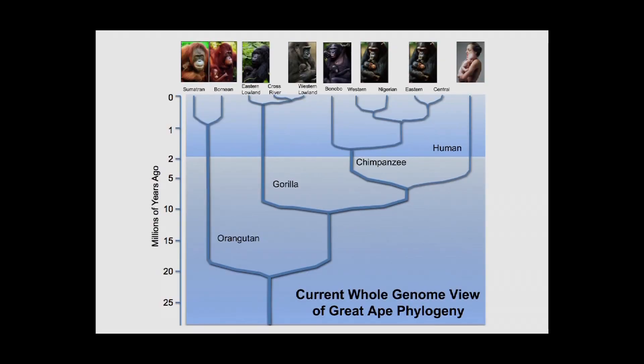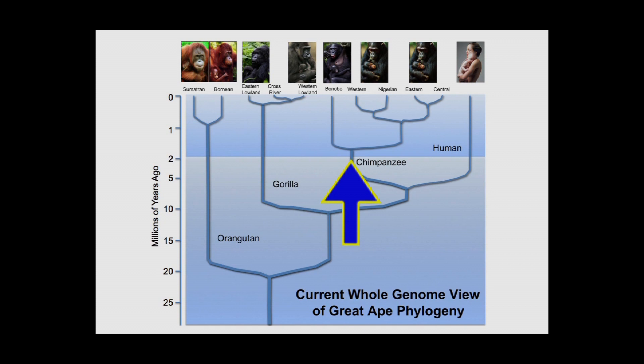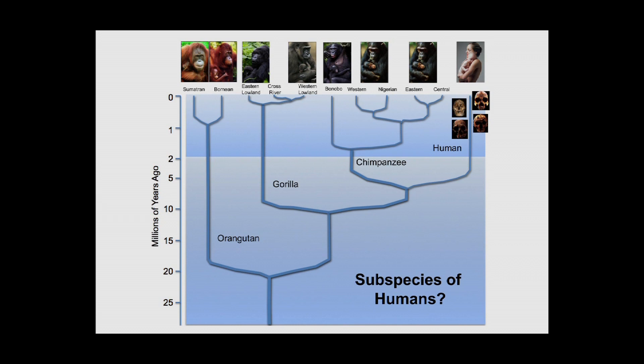We are certainly great apes, but there's something unusual about humans: the other great apes have subspecies or closely related forms that coexist with them. Orangutans have Sumatran and Bornean forms; gorillas have three or four subspecies including lowland, eastern, western lowland, and mountain gorillas; chimpanzees have bonobos and four different subspecies. Humans stand alone here.